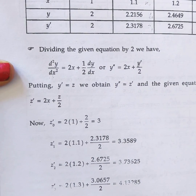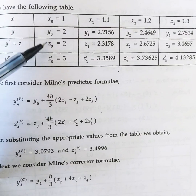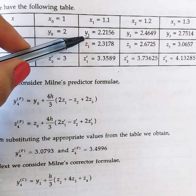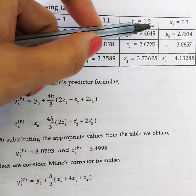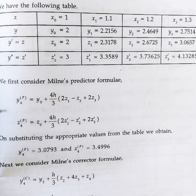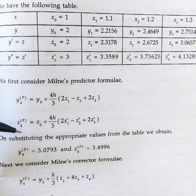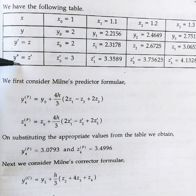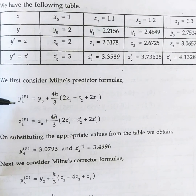We write all values neatly in a tabular column so it is easy to apply the formula. The column has x₀, y₀, z₀ and the corresponding z₀' we calculated; similarly x₁, y₁, z₁, z₁'; x₂, y₂, z₂, z₂'; and x₃, y₃, z₃, z₃'. Now coming to the prediction formula: y₄(p) = y₀ + (4h/3)(2z₁ - z₂ + 2z₃) and z₄(p) = z₀ + (4h/3)(2z₁' - z₂' + 2z₃'). We use first-order formula directly, giving two predictions y₄ and z₄.